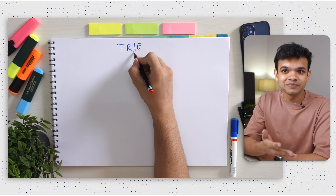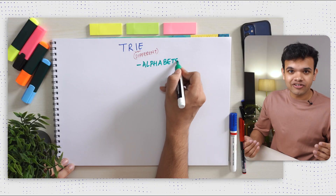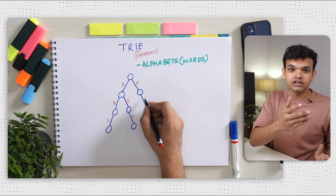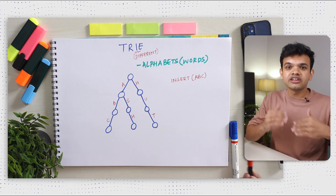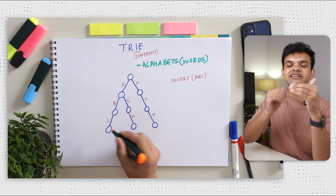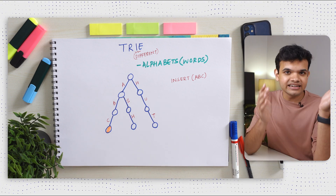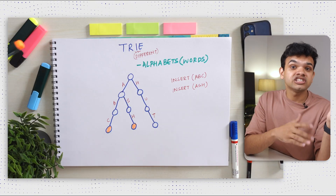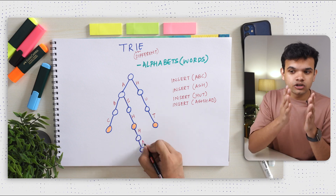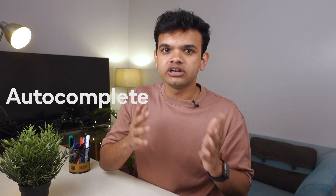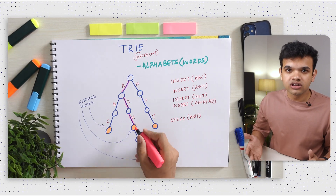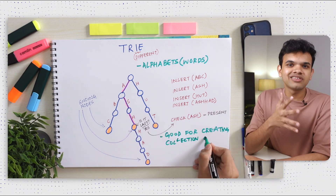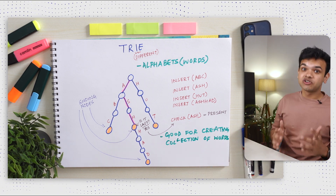Another data structure is a trie — it's a tree but used for alphabets. Every node has spaces for 26 children from A to Z. Let's say we need to add ABC — we create the first node, create another node linked to A, then to B, then to C, and mark that last node as an ending node. If we then insert ASH and ASHAD, it reuses the same prefix, saving memory. Traversing is really fast, so creating something like autocomplete or a dictionary is really optimized with a trie. If we search for a string that exists in the tree but whose last node is not marked as an ending node, the word is effectively not present.